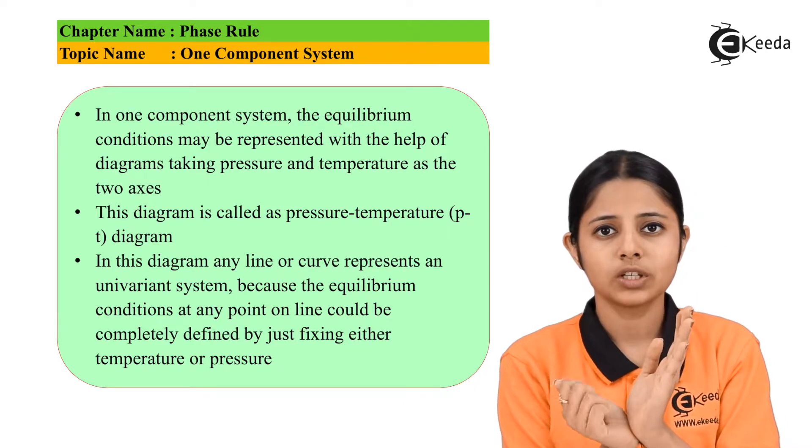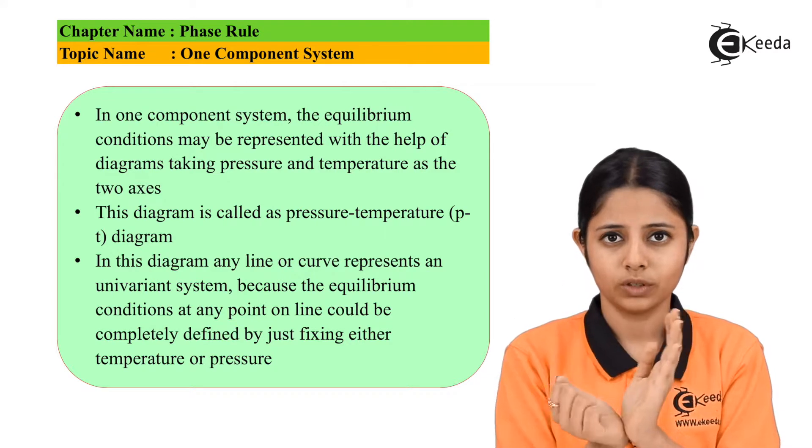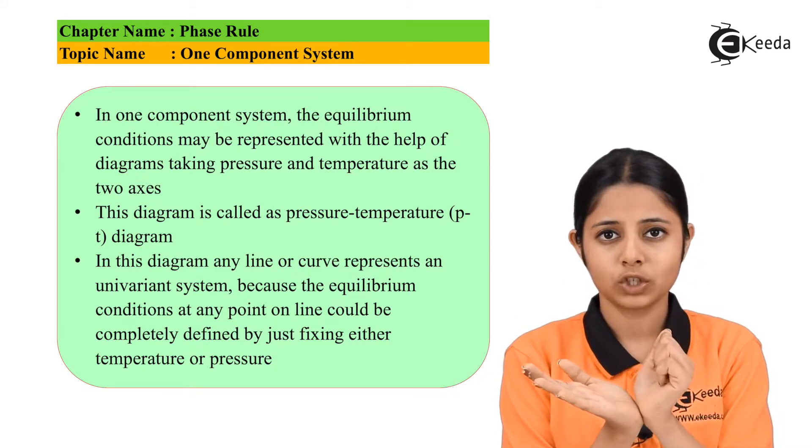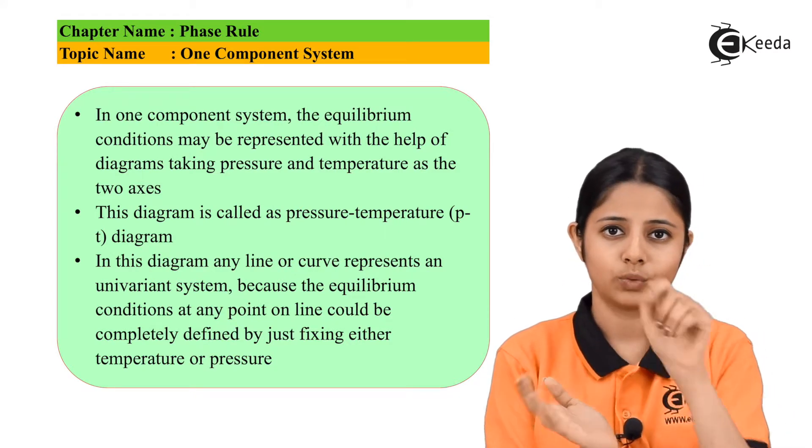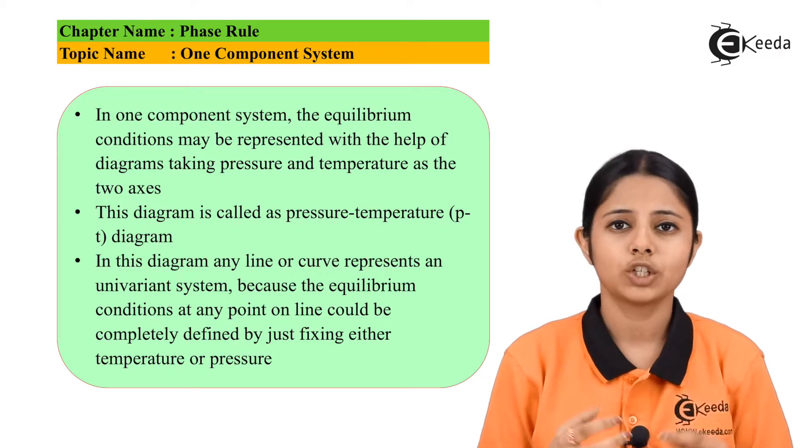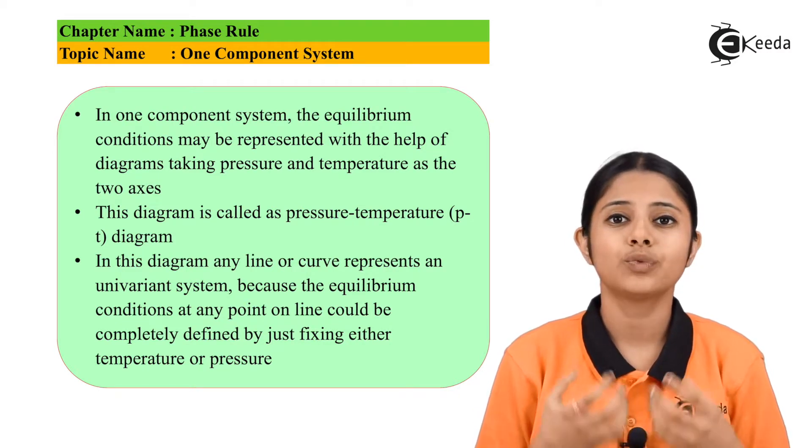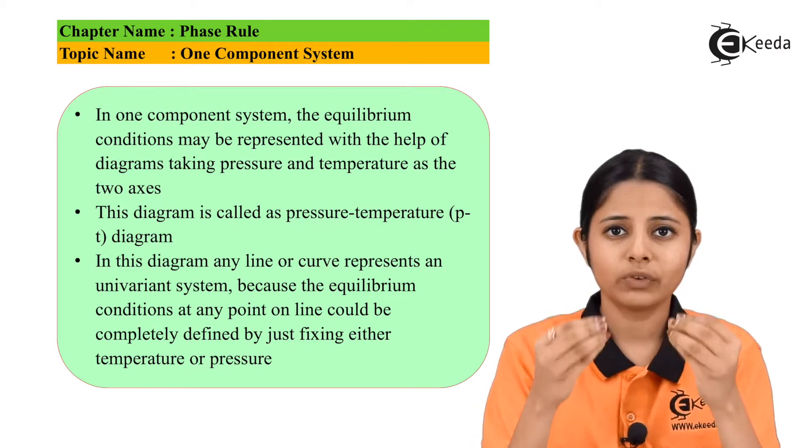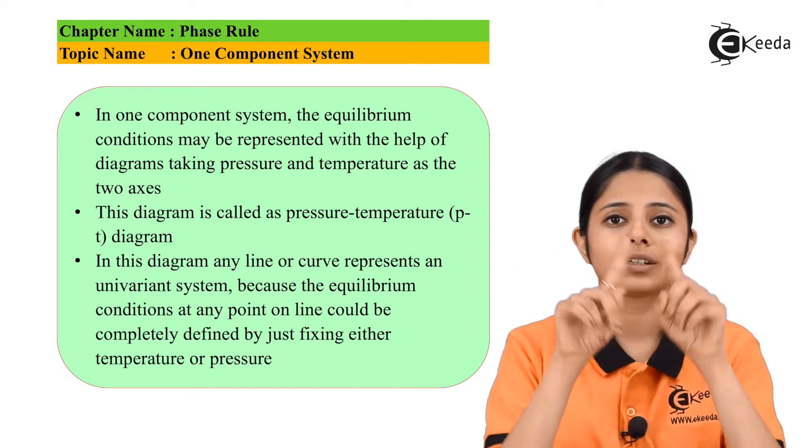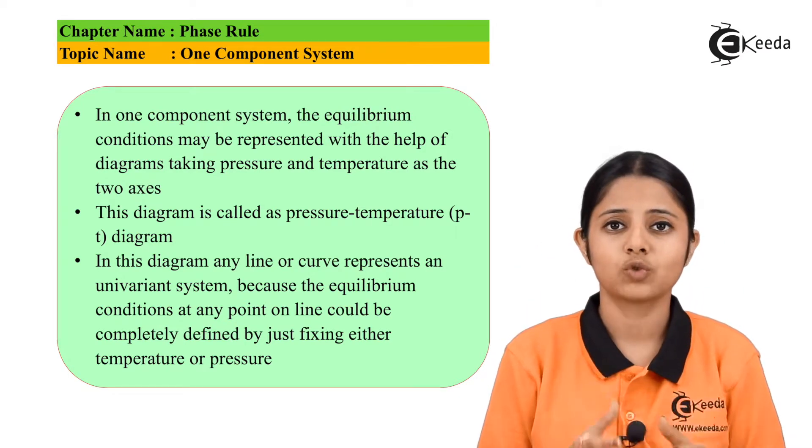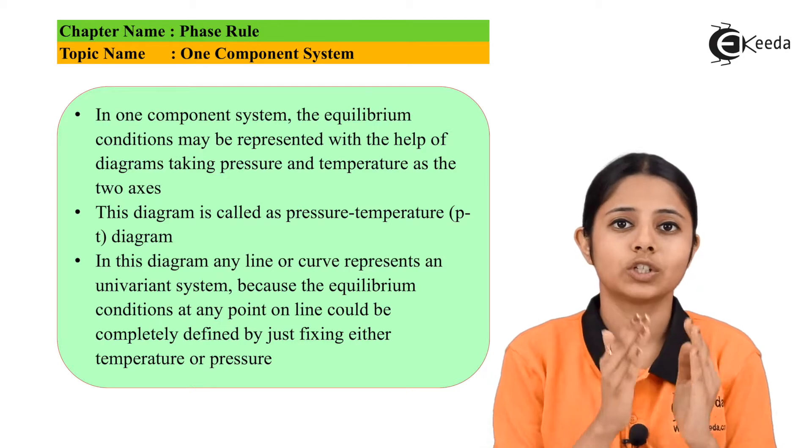If something changes in the temperature, the state might change. If something changes in the pressure, then again the state might change. What do we mean by change of state? We mean the change of equilibrium. The equilibrium point changes. The point at which the entire system is at equilibrium may change with change in temperature or with change in pressure.